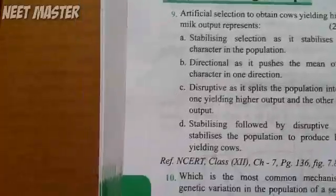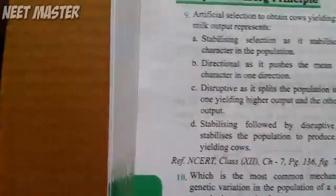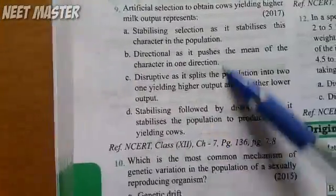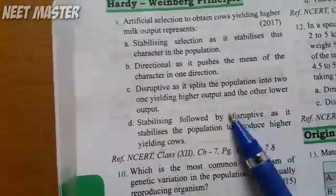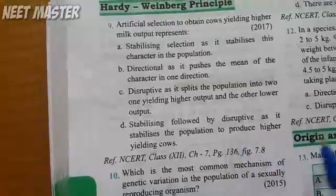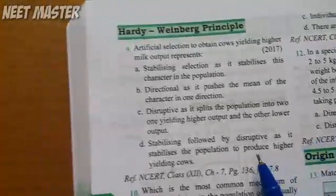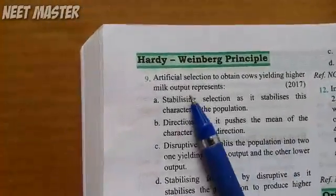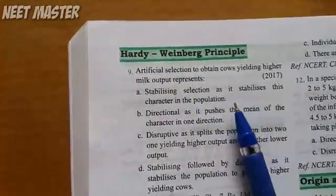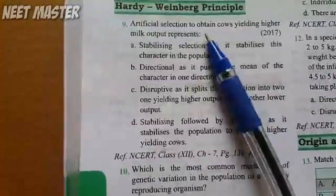Stabilizing selection keeps the peak and narrows the average. The answer here is directional — it pushes the mean in one direction. This is artificial selection — B is the correct answer.